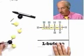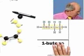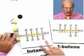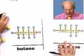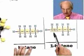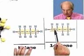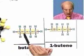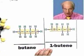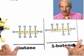Here is butene. Before, you saw the molecule butane, and now we have the molecule butene. The difference? There's a double bond right here in butene, and there's a single bond right here in butane. Trust me, that's important. Double bonds are important.